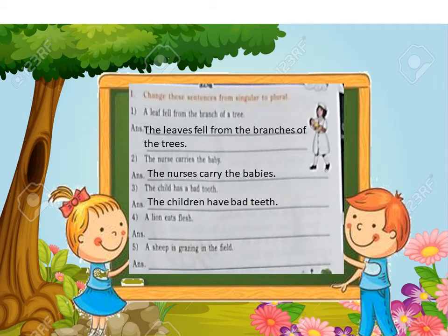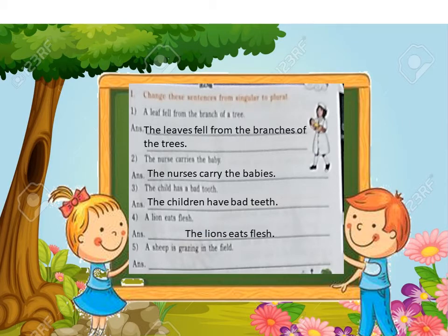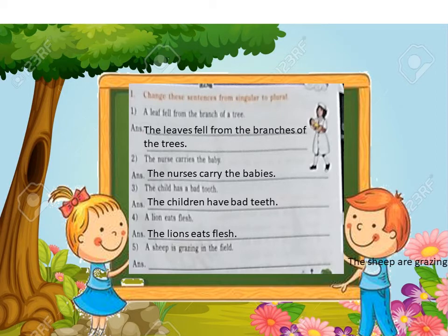Sentence 4: A lion eats flesh. Answer: The lions eat flesh. Sentence 5: A sheep is grazing in the field. Answer: The sheep are grazing in the field.